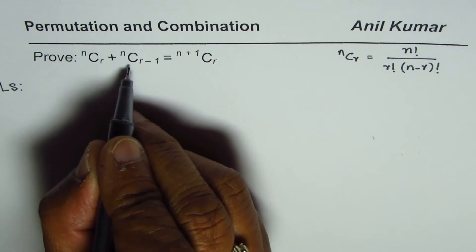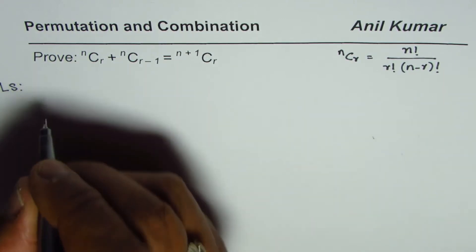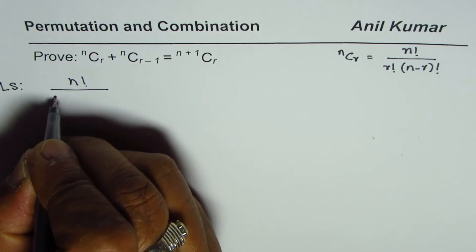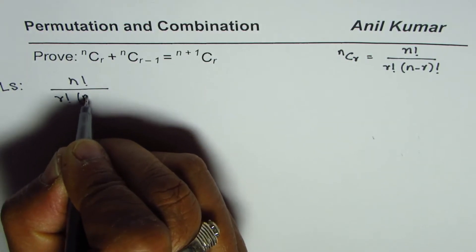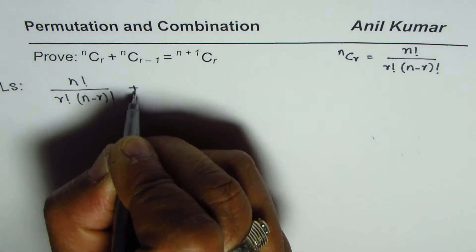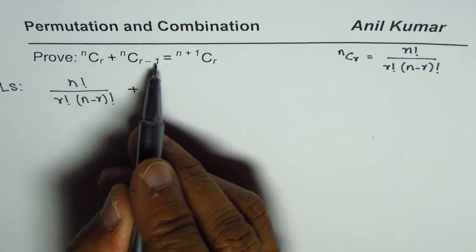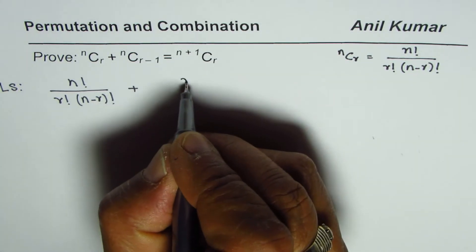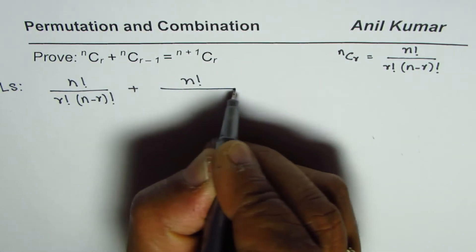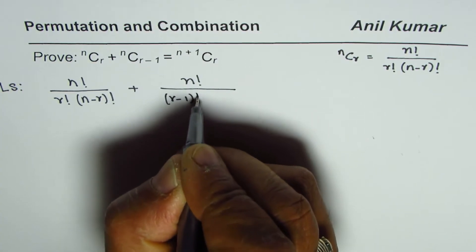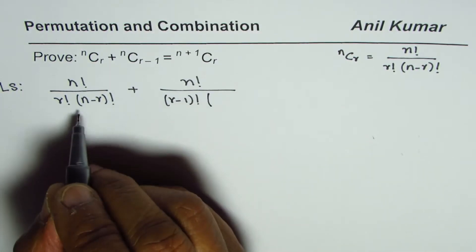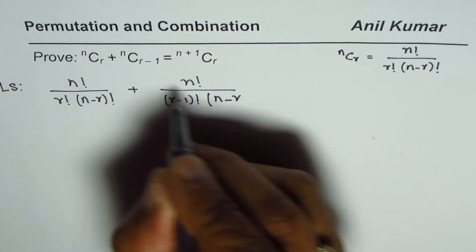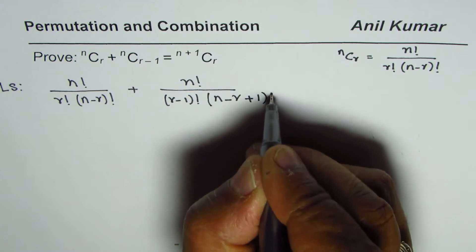Starting with the left hand side: nCr plus nCr minus 1. nCr can be written as n factorial divided by r factorial times n minus r factorial, plus nCr minus 1. For nCr minus 1 we replace r with r minus 1, giving n factorial divided by r minus 1 factorial times n minus r plus 1 factorial.